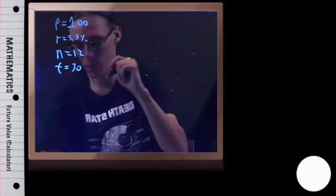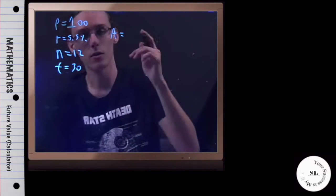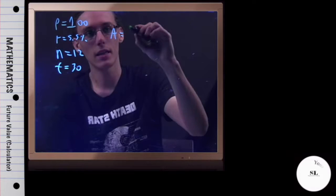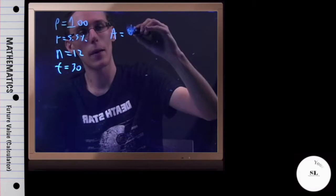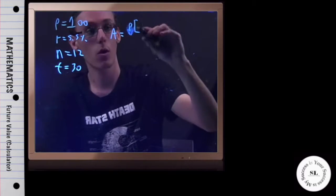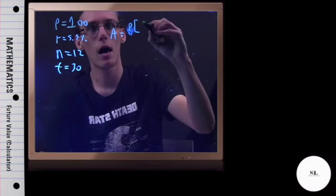So the formula we have to use here is that the amount in a retirement account is the payments we're making at the end of each month, times all of this—that's why I'm using a bracket here so we don't get confused with the parentheses.